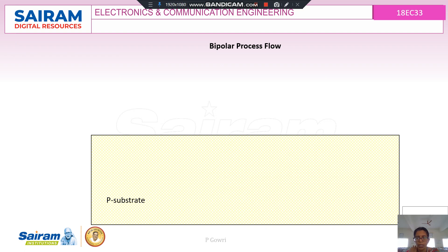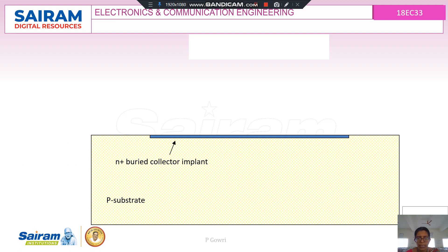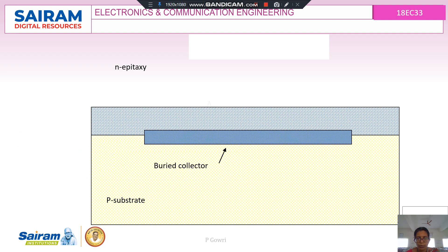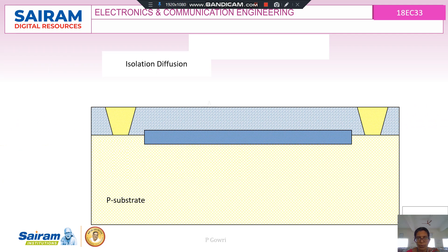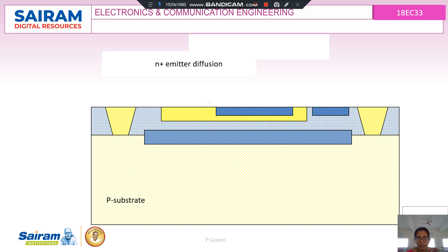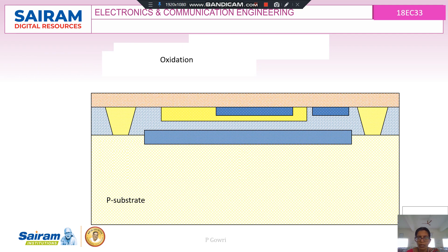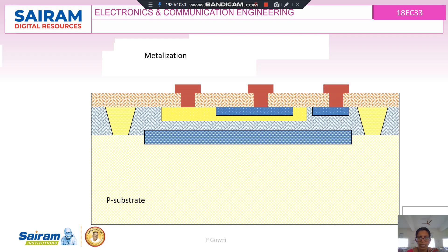The overall process flow is as follows: starting with a p-type substrate, an N+ buried collector implant is formed, followed by epitaxial layer growth. The buried collector is induced, and a diffusion process is performed for isolation. The base region is then formed, followed by the emitter diffusion process. An oxidation step is performed, followed by contact openings, and finally the metallization process takes place to establish the metal contacts.